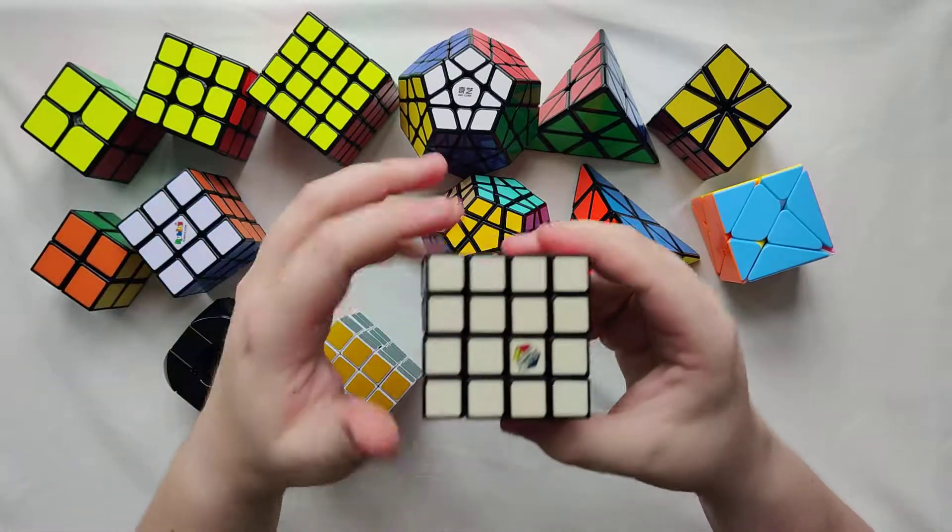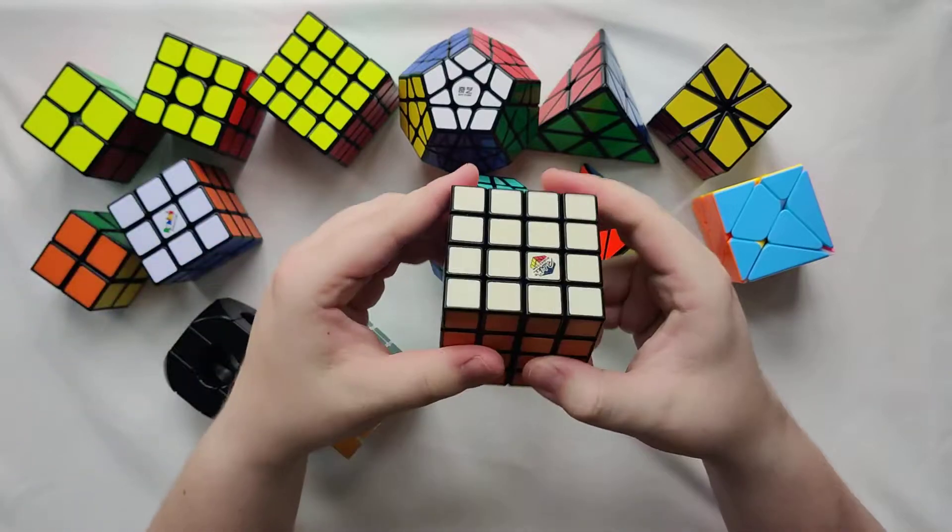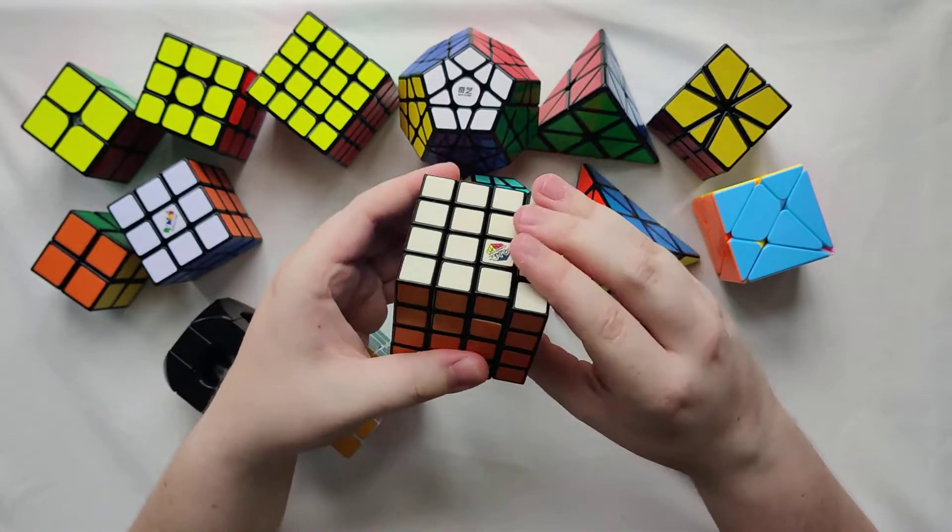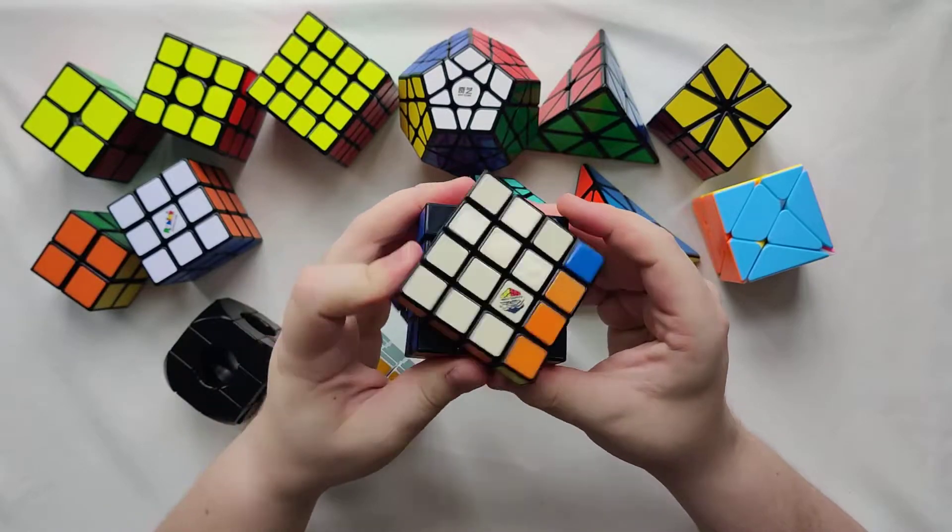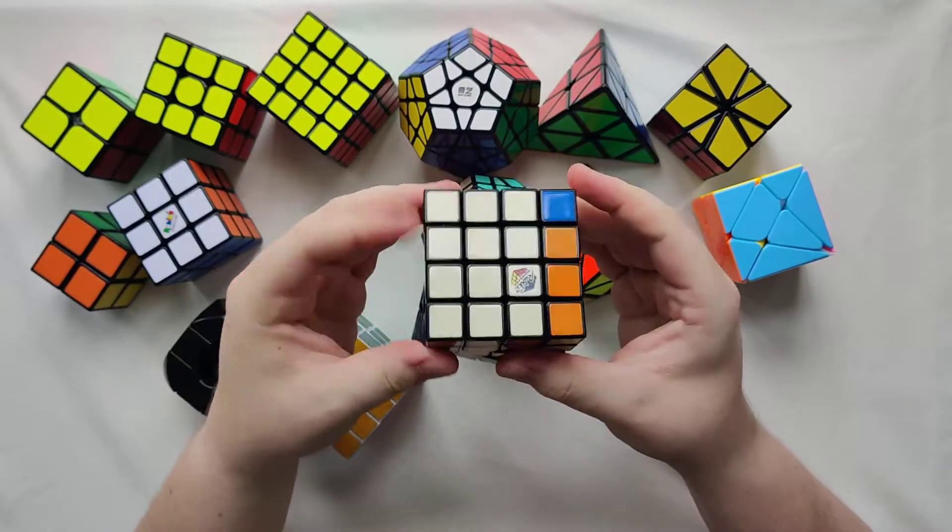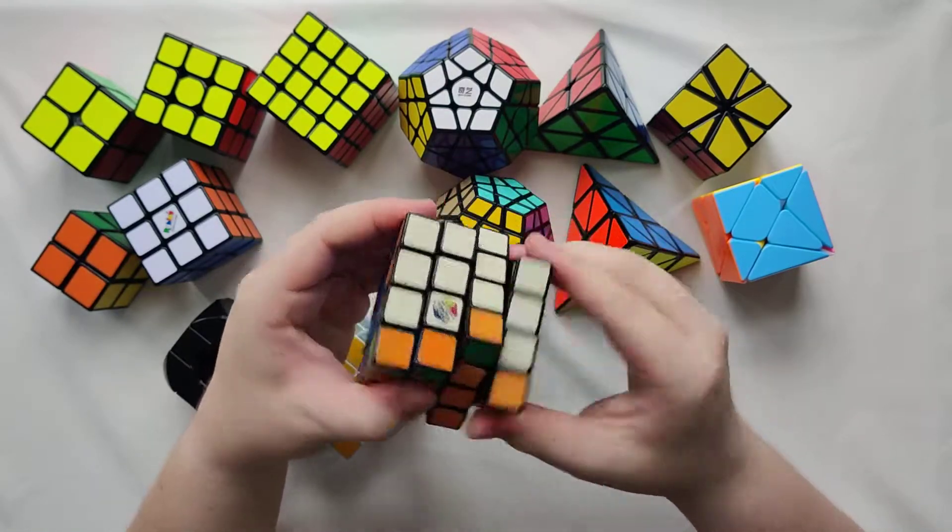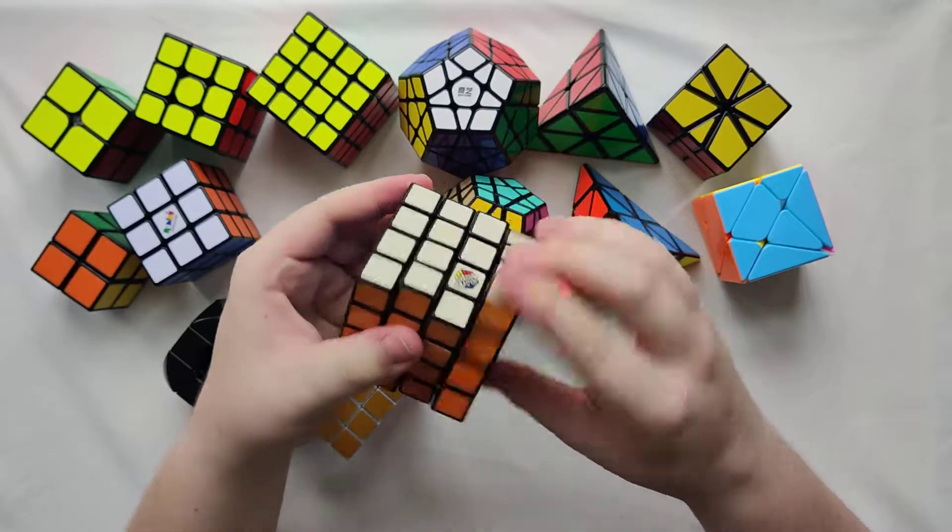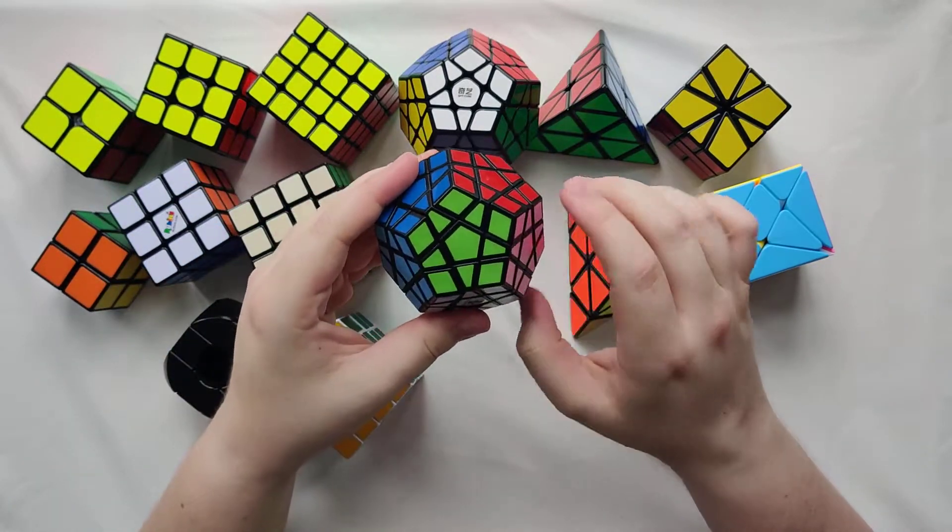And then my Rubik's brand 4x4. This one is definitely yellowed as you can tell there. This one is just so clunky and horrible. And it's just clicky. Okay, that never happened before. I was turning the top layer and the bottom layer came with it. So this 4x4 is definitely one of my least favorites.